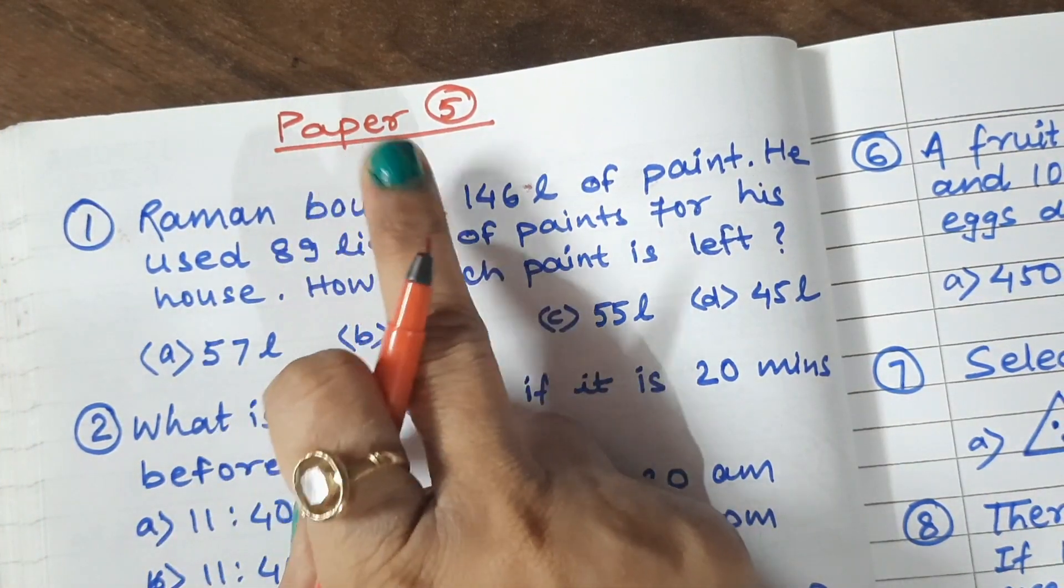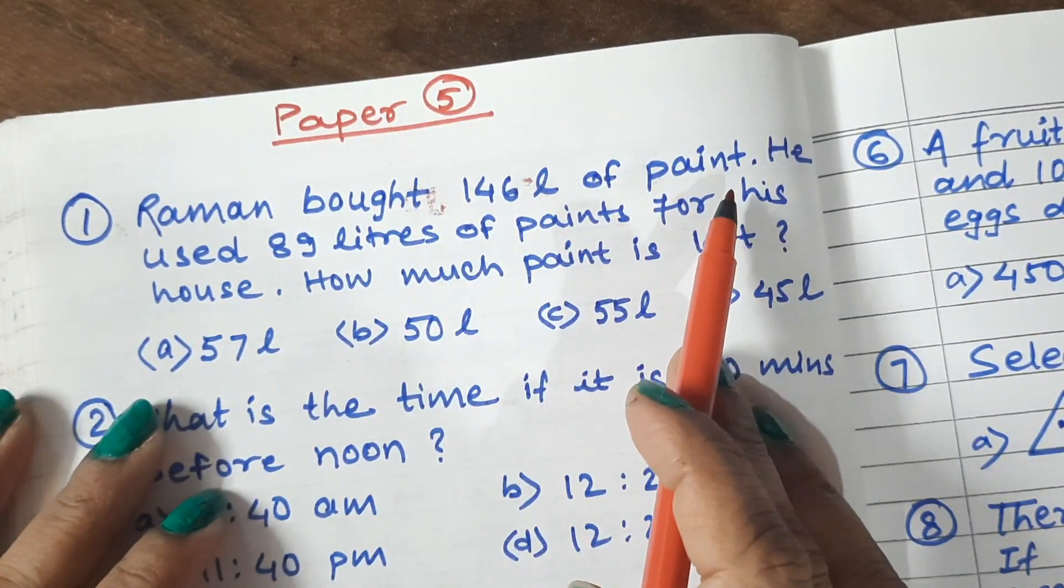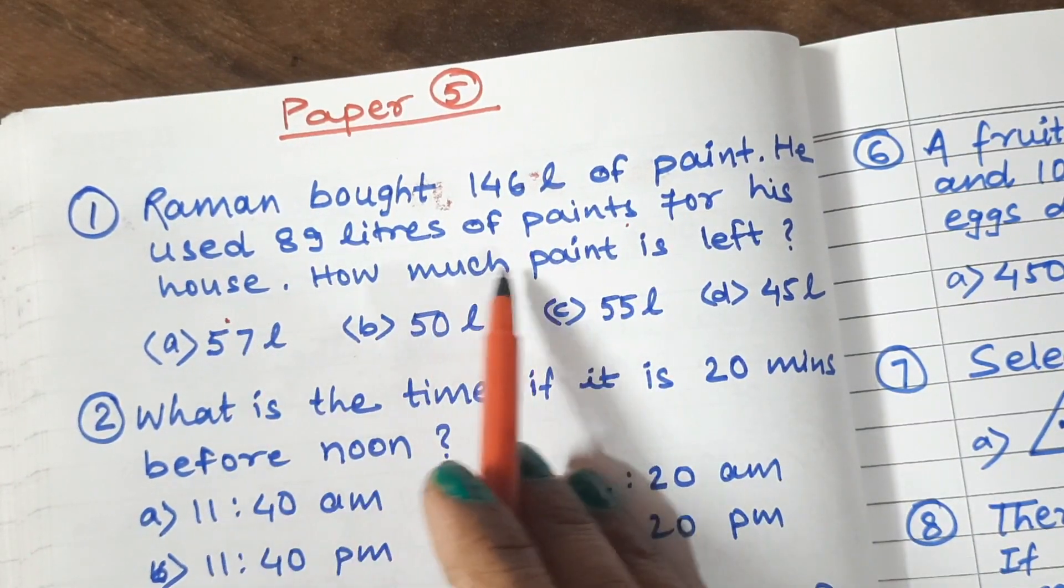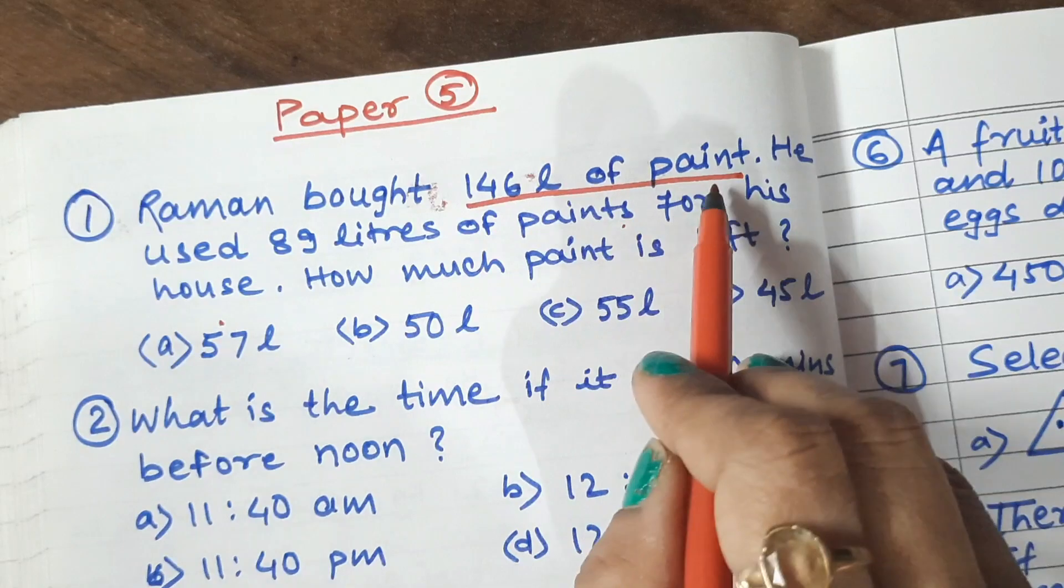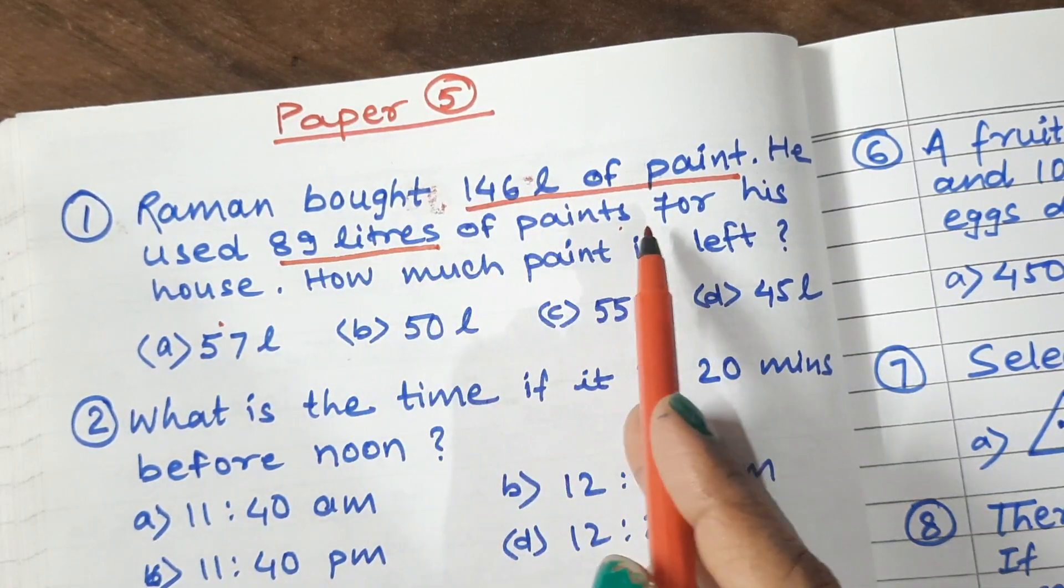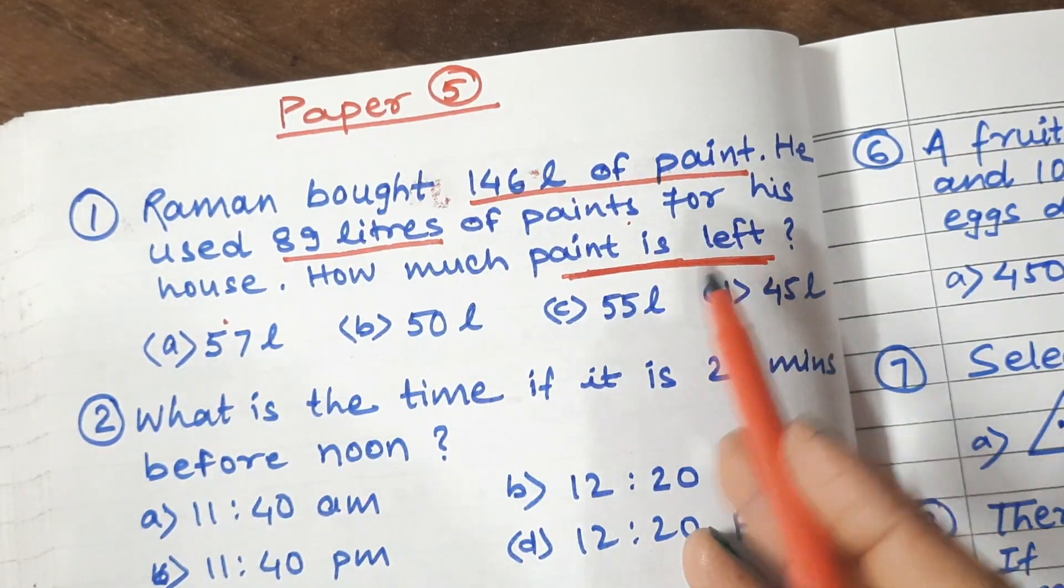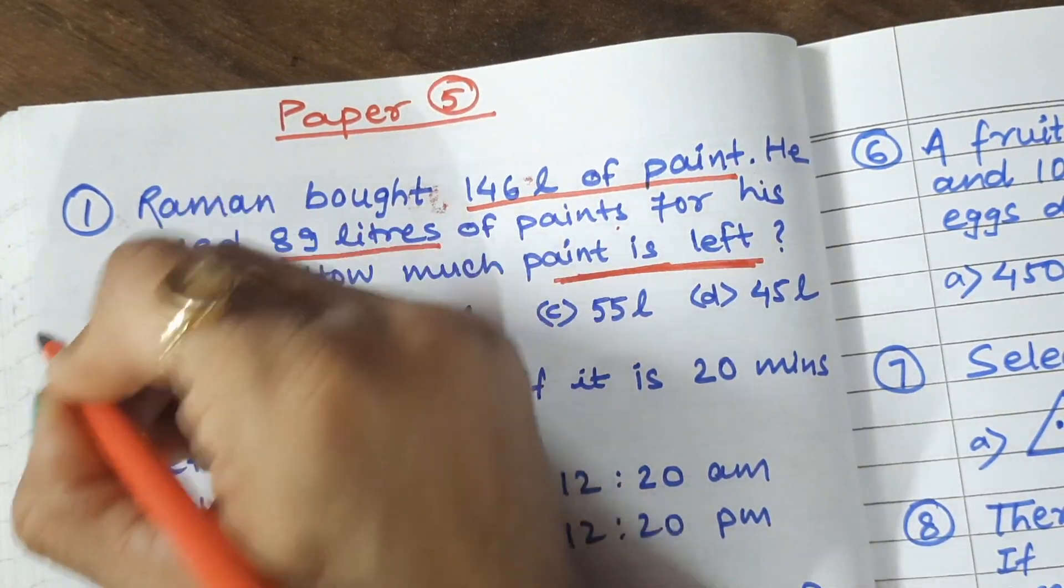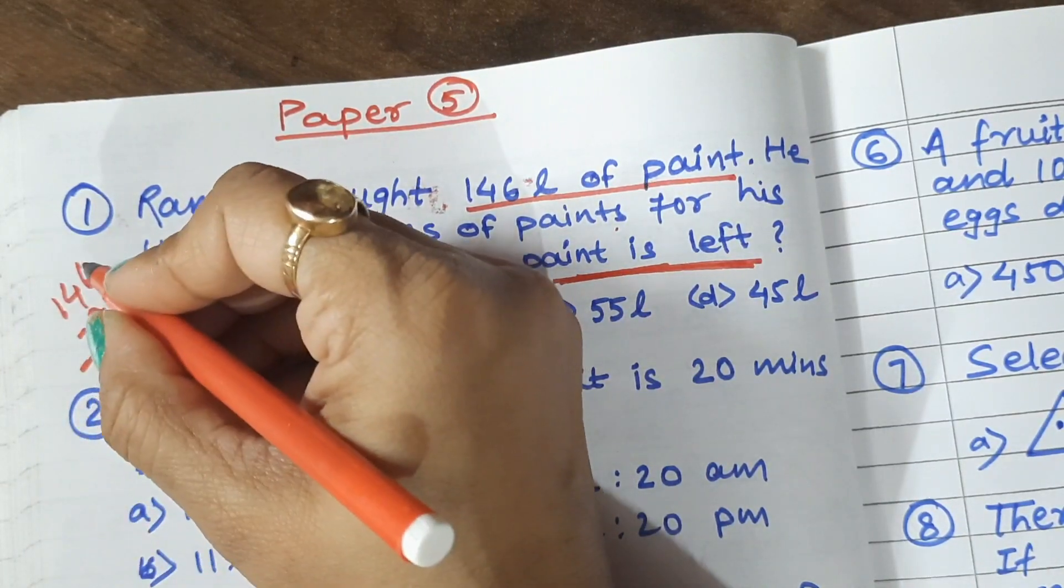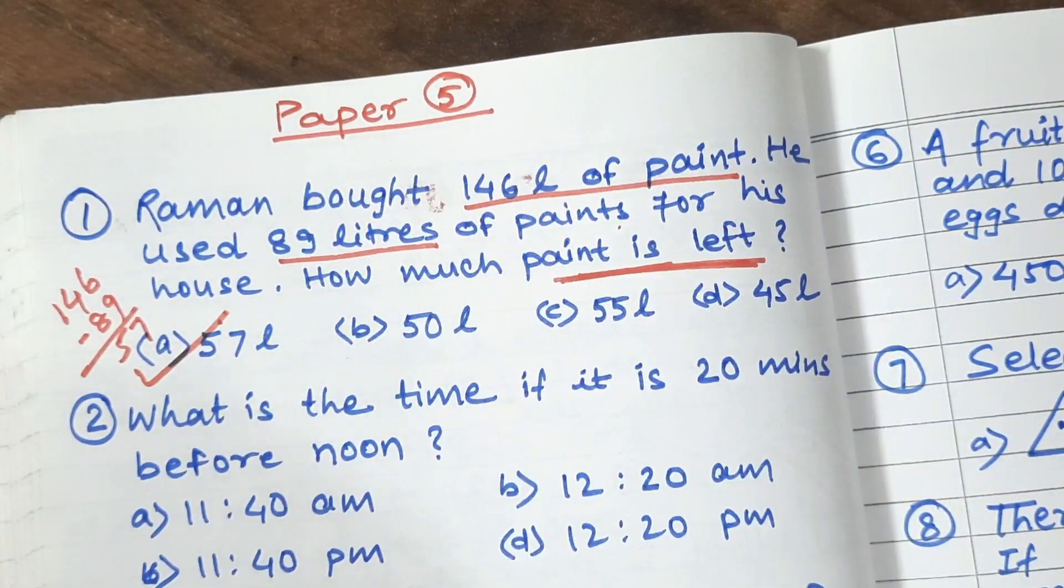Question number 1 of paper 5. Raman bought 146 liter of paint. He used 89 liters of paint for his house. How much paint is left? Here, Raman bought 146 liter of paint. And he used 89 liters in his house. So how much paint is left? Left means minus. So 146 minus 89. This is the answer to minus.